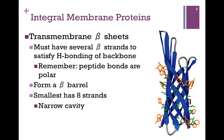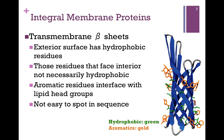It's called a beta barrel. The smallest has eight strands — any smaller and the structure would be too constrained. With only eight strands, it forms a very narrow cavity, though usually there are more strands than this. The exterior surface of that beta sheet is in contact with the hydrophobic environment, and those side chains facing that environment tend to be hydrophobic.